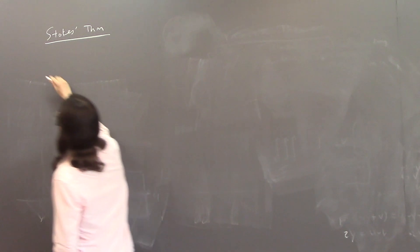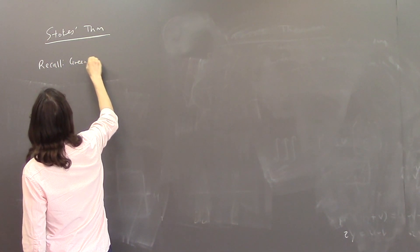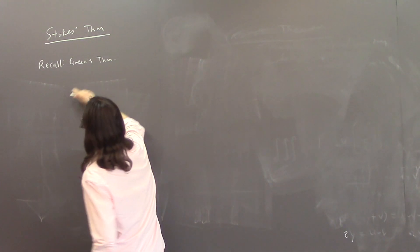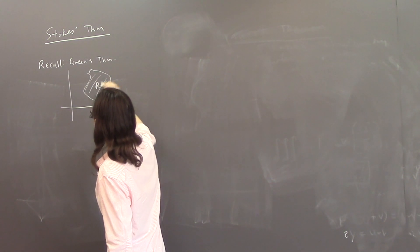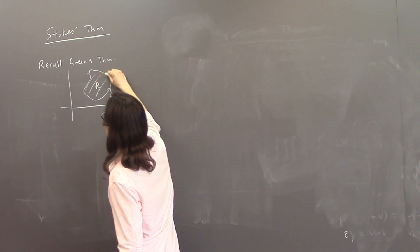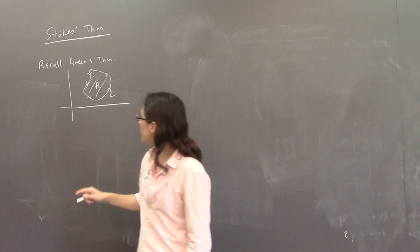So recall Green's Theorem, Green's Theorem says that if you're in the x-y plane and you have some sort of a blob here, let's call it R, and then you have a curve C that is the oriented boundary curve of R, oriented counterclockwise.